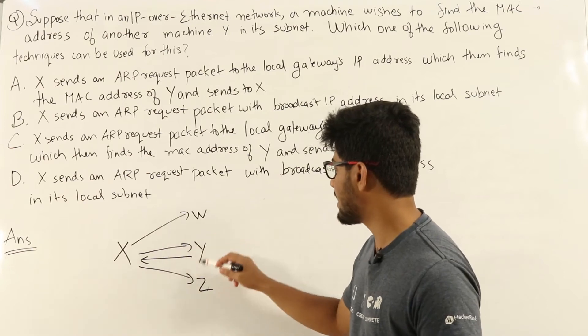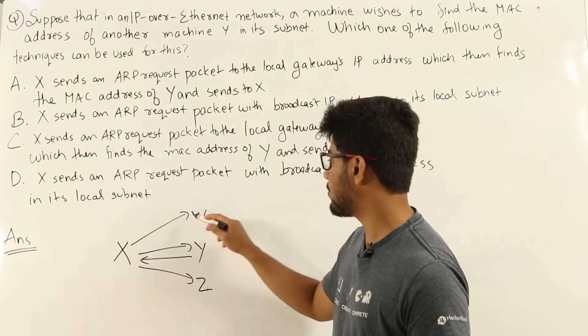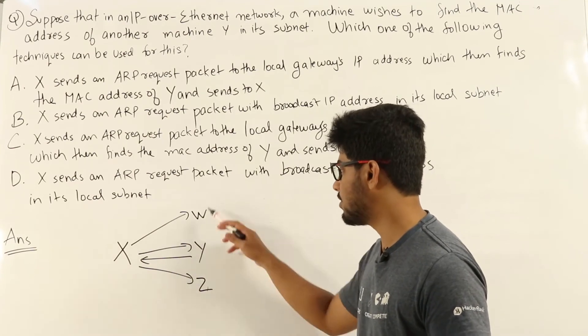So, let us say W, Y and Z are there in its local subnet. So, that broadcast message will be received by W, Y and Z. All three will receive it.